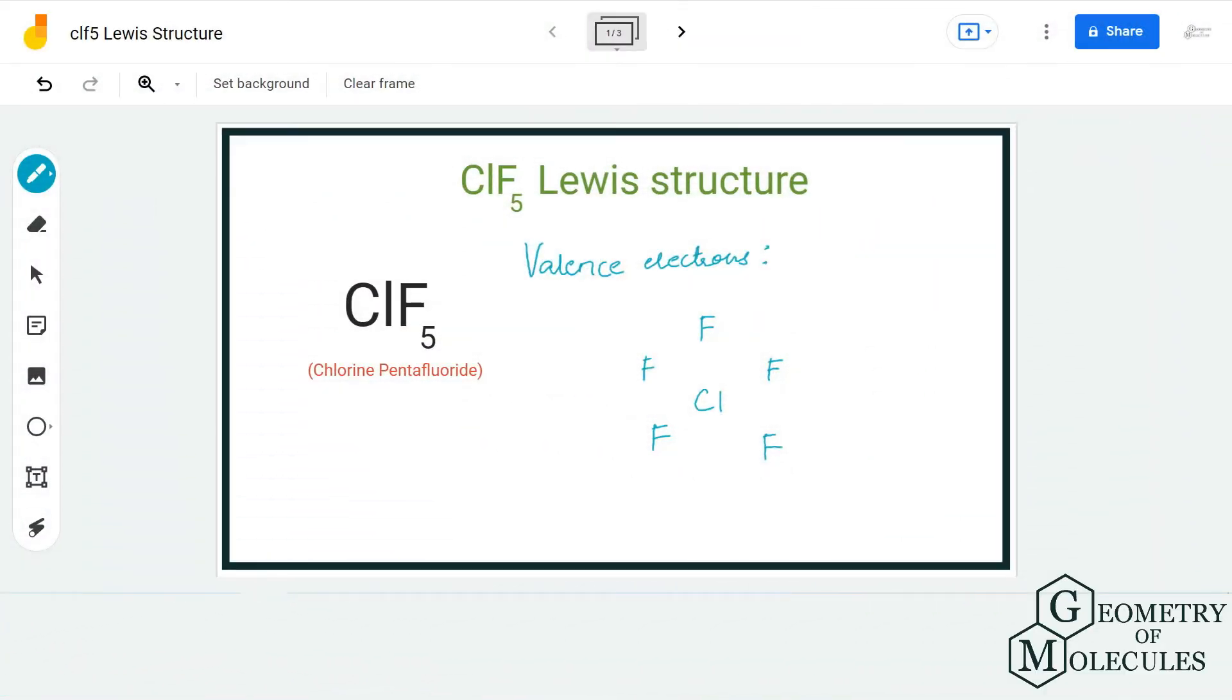Hi guys, welcome back to our channel and in today's video we are going to help you determine the Lewis structure for ClF5 molecule. It is a chemical formula for chlorine pentafluoride and to determine its Lewis structure we are first going to look at the total number of valence electrons.